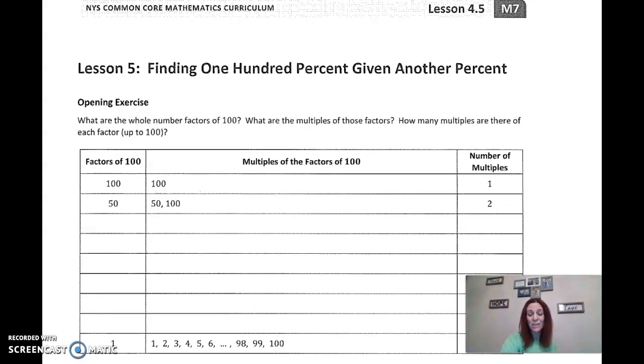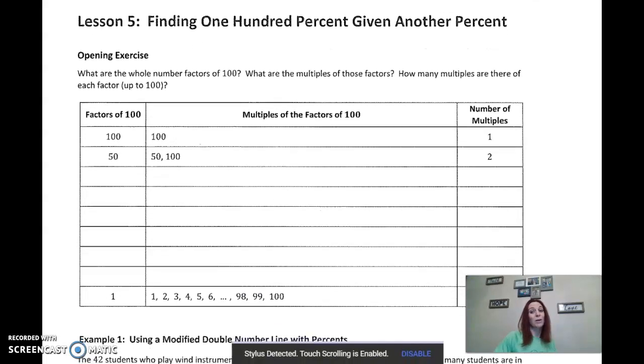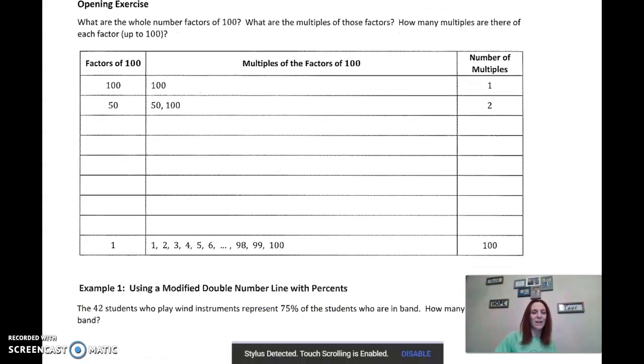Lesson five is, guess what? We're dealing with more percents. It says finding 100% given another percent. But really, we're using this lesson to become comfortable with what a percent is. It's quantity out of whole. It's part out of a whole, right? And so we're going to be using a lot of the same formulas. So it's helpful if we can recognize the factors. What are factors? And what are multiples of those factors?